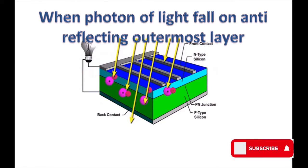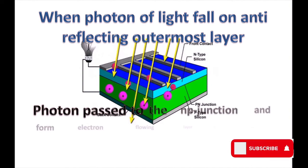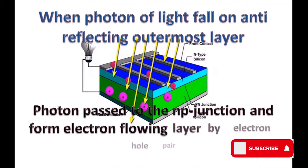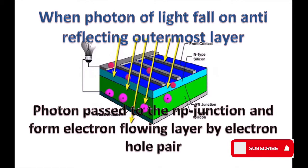When photons of light fall on the anti-reflecting outermost layer, they pass to the N-P junction and form an electron-flowing layer through electron-hole pairs.